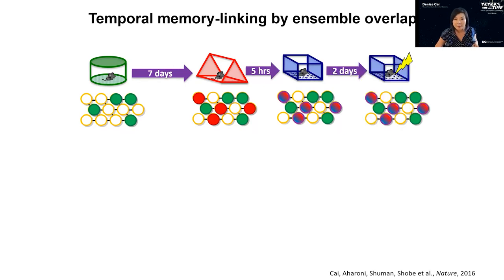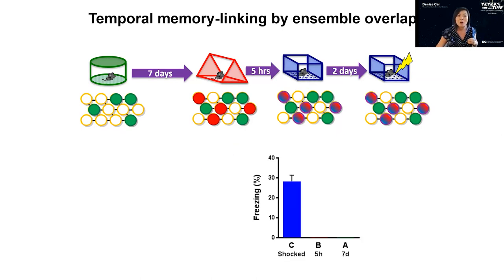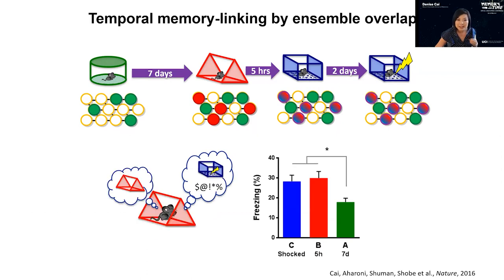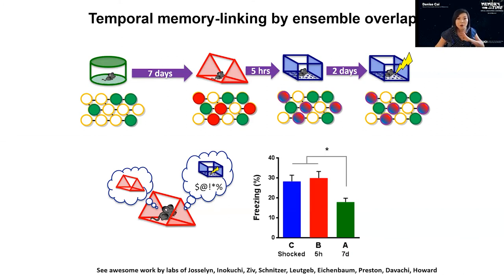In this study, animals were brought back two days later and the memory was updated with a shock. To test memory linking, we bring them back to the shocked context where they freeze. When they return to the green context — not shocked and with low ensemble overlap — they freeze much less. Interestingly, when they enter the red context, they not only recall it but that triggers recall of the blue context where they were shocked, and they freeze there too. This is our behavioral paradigm for memory linking — transferring the valence of one context to another.